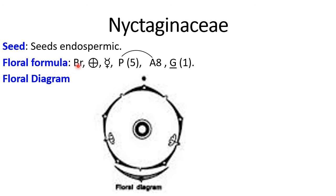Now the floral formula. It is bracteate, actinomorphic — you will see symmetry throughout, passing through more than one plane, so it is considered actinomorphic. It is bisexual, because male and female reproductive structures are present in one and the same flower. Perianth is 5 in number — there are 5 tepals.